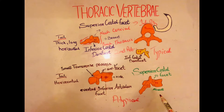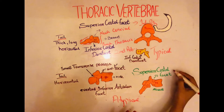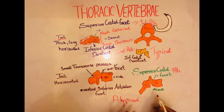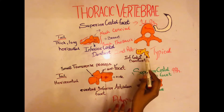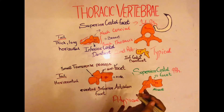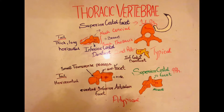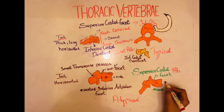Next up we have the T9 vertebrae. Looking at T9, it has the superior costal facet for the attachment of the ninth rib, whereas it lacks the inferior costal demi facet that we have at T5. From T1 to T8, all the thoracic vertebrae have a facet and demi facet for the attachment of the head of the next rib, whereas in T9 and T10 the demi facets are absent. The body of the T9 vertebrae is heart-shaped.